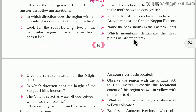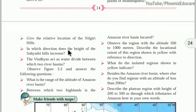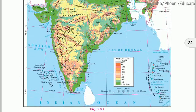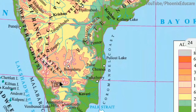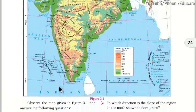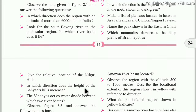Which mountain demarcates the deep plains of Brahmaputra? The answer is the Purvanchal Mountains — Garo, Khasi, and Jaintia Hills, also called Purvanchal Mountains. The Nilgiri Hills are located in the south. Regarding the Sahyadri Hills, the height increases towards the south — as we go from north to south along the Sahyadri, the height increases southward.